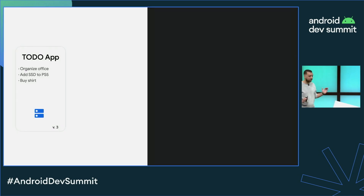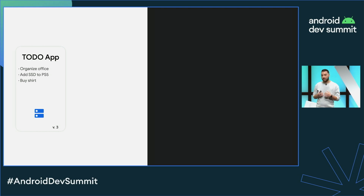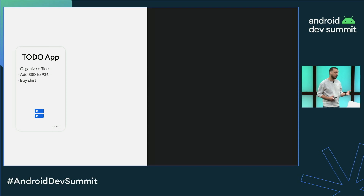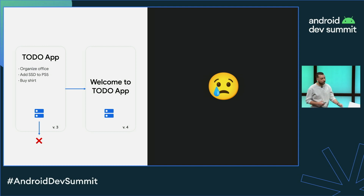However, and this is the important part, if the data on your database is indeed the source of truth, then it is very important to perform that schema migration, because otherwise it can be a very unpleasant experience for a user to update their app and lose their data.